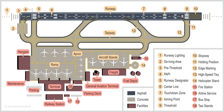Airports with international flights have customs and immigration facilities. However, as some countries have agreements that allow travel between them without customs and immigration, such facilities are not a definitive need for an international airport. International flights often require a higher level of physical security, although in recent years many countries have adopted the same level of security for international and domestic travel. Floating airports are being designed which could be located out at sea, using designs such as pneumatic stabilized platform technology.